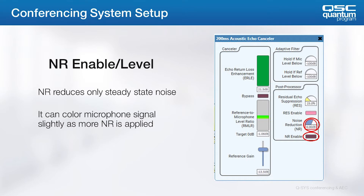Keep in mind that the noise reduction algorithm is designed to remove constant, steady-state noise — not things such as the noise of passing traffic, talkers in the hallway, etc. Engage the noise reduction with the NR Enable button and apply only the amount of noise reduction needed to eliminate the noise. Applying too much noise reduction could adversely affect the quality of the mic signal at the far end. If noise reduction is required, you'll want to make sure it's applied to all the microphones in the room.